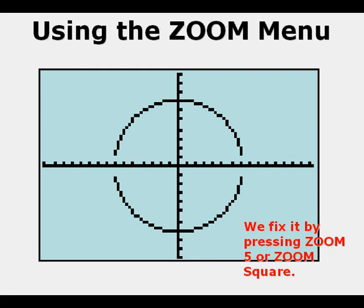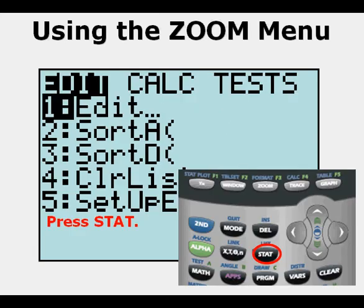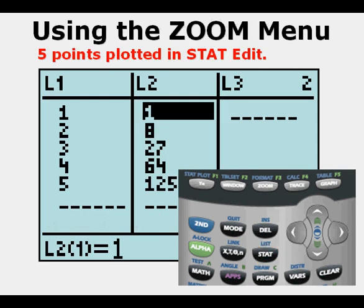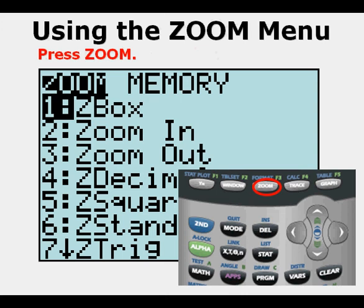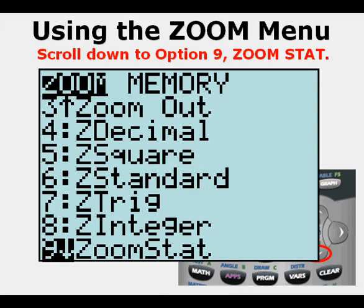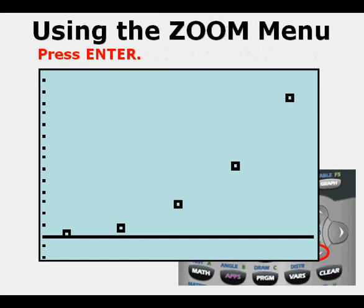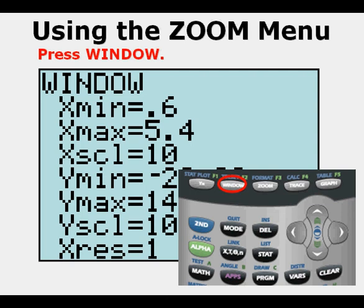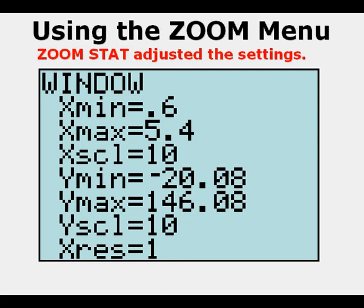We'll look at one more option. Press Stat. Here are five points in StatEdit. Press Zoom, scroll down to Option 9, Zoom Stat, and press Enter. We see all the points that were plotted. Press Window, and here's how Zoom Stat adjusted the window settings to be able to see all the points that were plotted in the StatEdit.